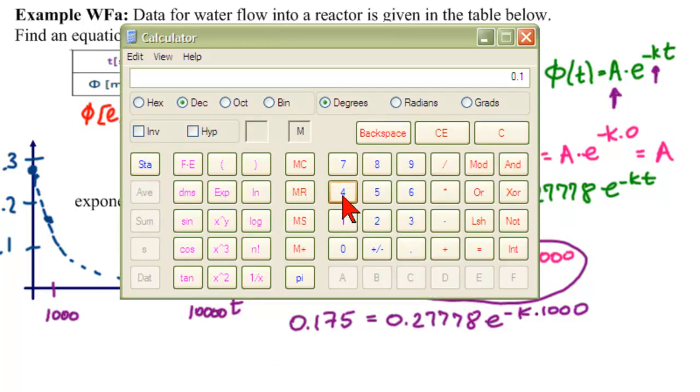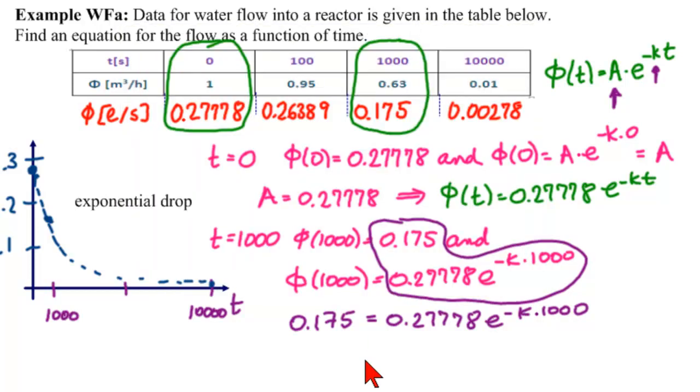and we put 0.175 divided by 0.2777, and as many 7s as we can get in there, because that's how much it really was, 8 equals, and we get 0.63. So, what we have is 0.63 equals e to the minus k times 1,000.